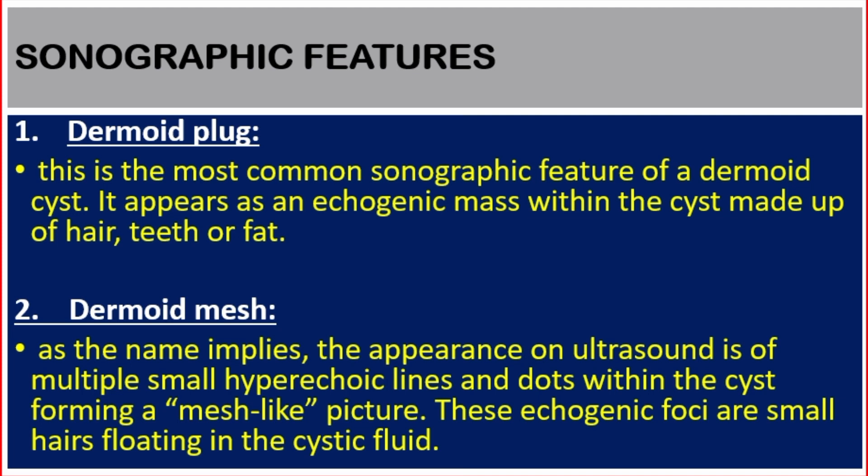Sonographic features. Number one: dermoid plug. This is the most common sonographic feature of a dermoid cyst. It appears as an echogenic mass within the cyst, made up of hair, teeth, or fat.